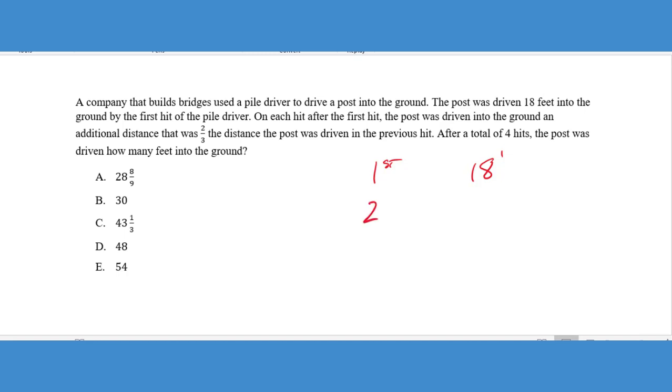It says on each hit after the first hit, the post was driven into the ground an additional distance that was two thirds the distance the post was driven in the previous hit. So let's just go ahead and think about that. Our second hit would be 18 feet and an additional two thirds. Well we need to know what that amount is. So it went two thirds the distance of 18 feet. So that would end up being 12 feet.